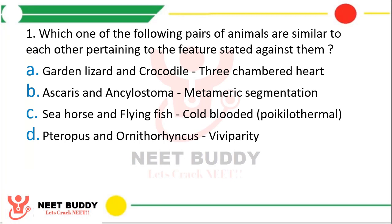The correct answer is option C, that is seahorse and flying fish. In option A, crocodile has a four-chambered heart. And in option D, Ornithorhynchus is an egg layer — that is, it is oviparous, not viviparous. So the correct answer is option C.